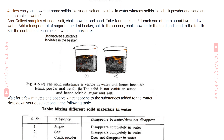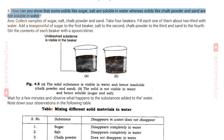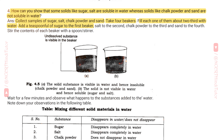Question 4: How can you show that some solids like sugar and salt are soluble in water, whereas solids like chalk powder and sand are not soluble in water? Answer: Collect samples of sugar, salt, chalk powder, and sand. Take four beakers and fill each about two-thirds with water. Add a teaspoon of sugar to the first beaker, salt to the second, chalk powder to the third, and sand to the fourth. Stir the contents of each beaker with a stirrer.